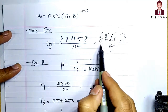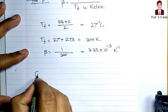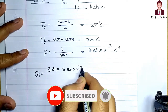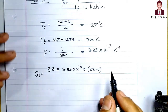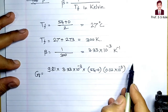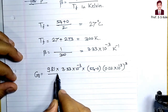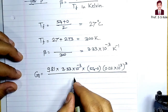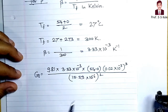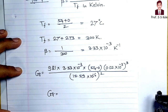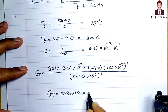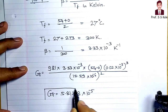Now putting all values into the Gr formula: Gr = 9.81 × 3.33 × 10⁻³ × 54 × (0.02 × 10⁻³)³ / (15.59 × 10⁻⁶)². Doing the calculation, Gr comes out to be 5.81218 × 10⁻⁵.